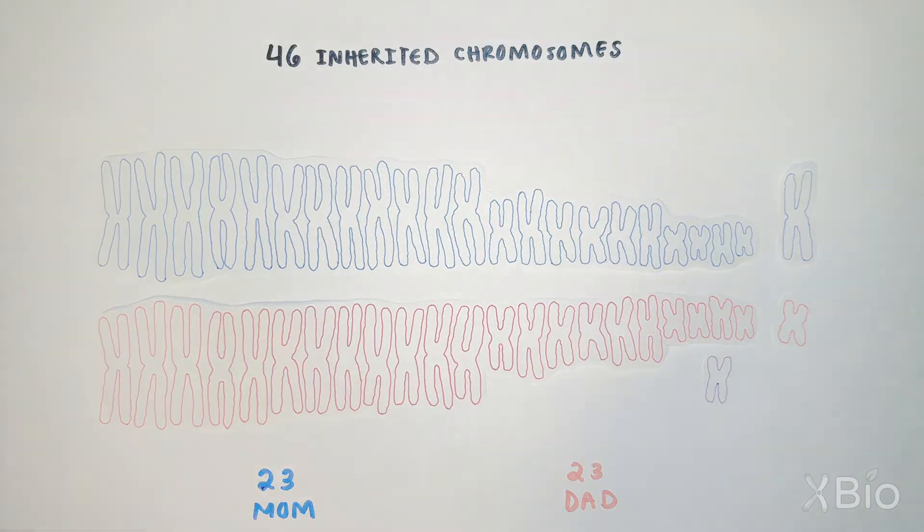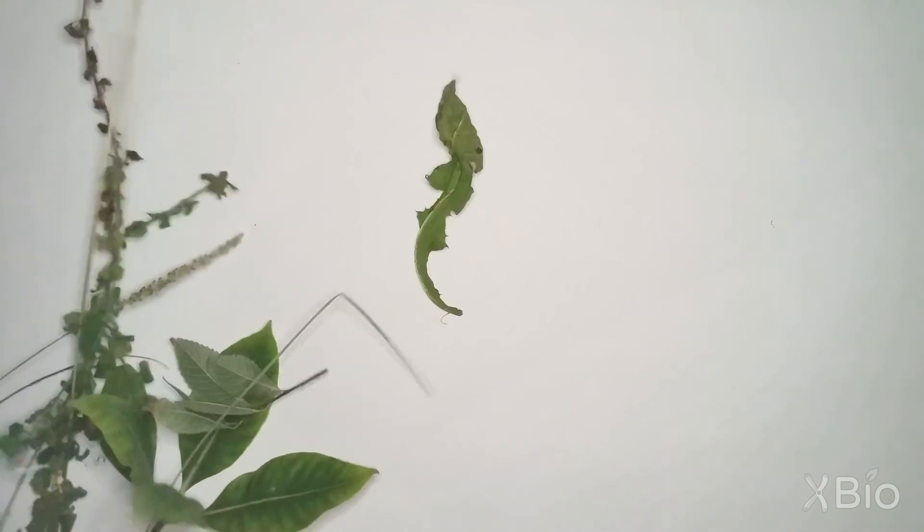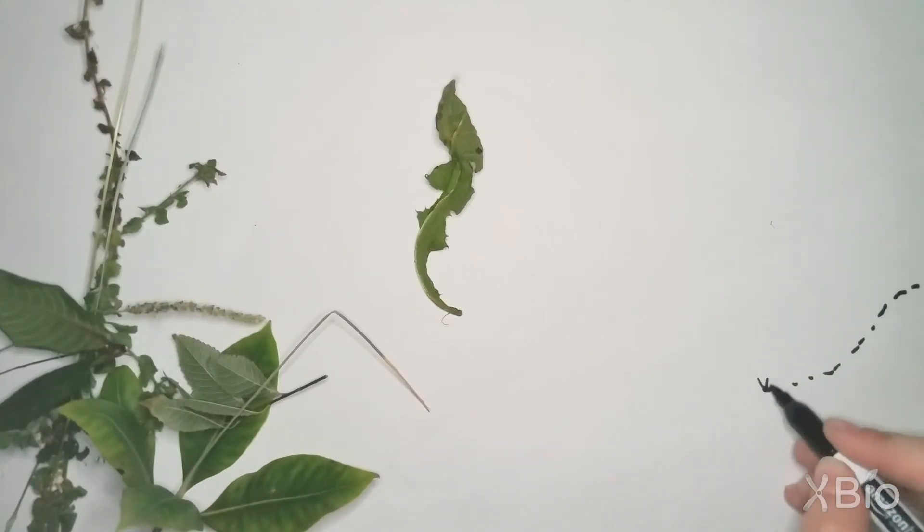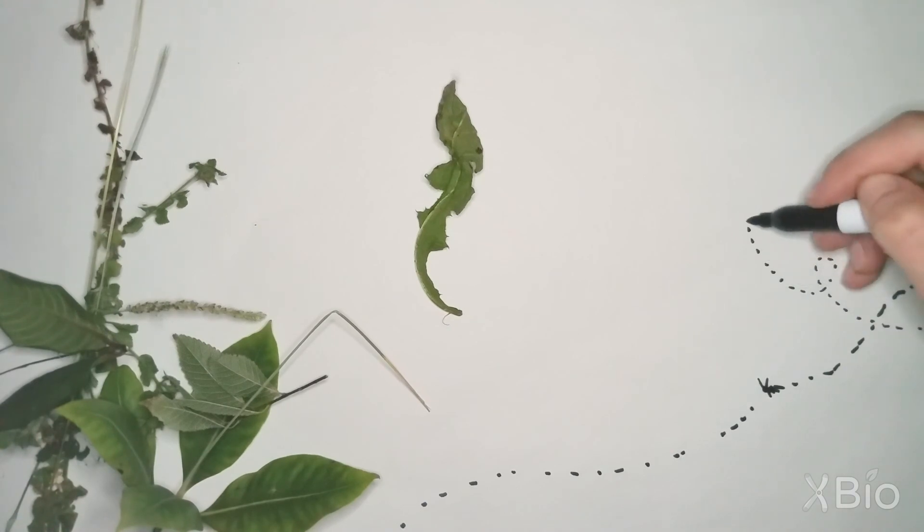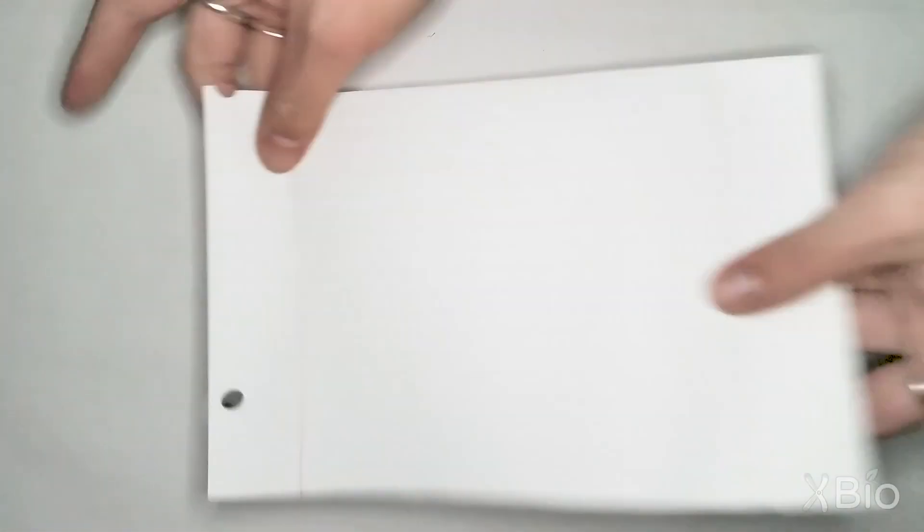Different organisms have different numbers of chromosomes. Some plants have hundreds of chromosomes, and some ants have only one pair. In addition to their role in heredity, chromosomes are a way of packaging a long string of DNA in a small space.